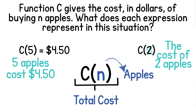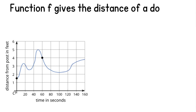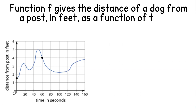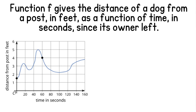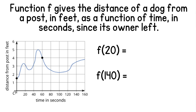Function f gives the distance of a dog from a post in feet as a function of time in seconds since its owner left. We want to find f of 20 and f of 140. To find f of 20, we go to 20 on the x-axis and go up until it hits our function line — this tells us that f of 20 equals three feet. To find f of 140, we go to 140 on the x-axis and go up until it hits our function line.